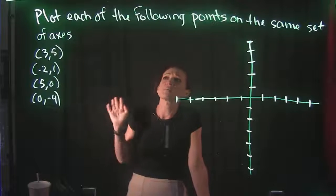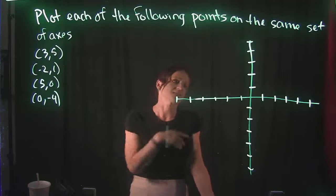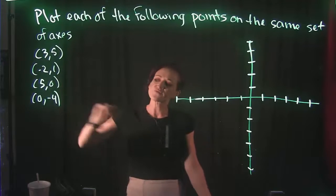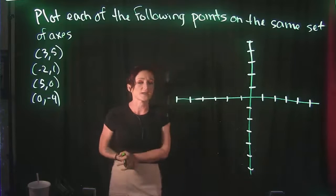Alright, so for this problem we're going to plot each of the following points on the same set of axes here. So they give us four different points that they want us to plot, and we're going to plot them on our coordinate system right over here.